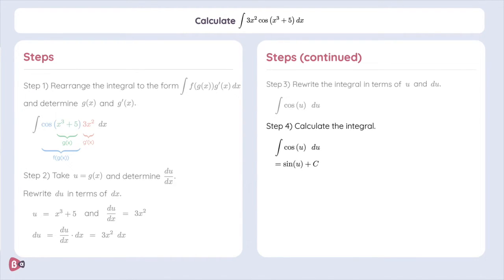Finally, we must replace u by g of x. Doing so, we obtain as our final answer the sine of x cubed plus 5, and then this whole thing plus c.